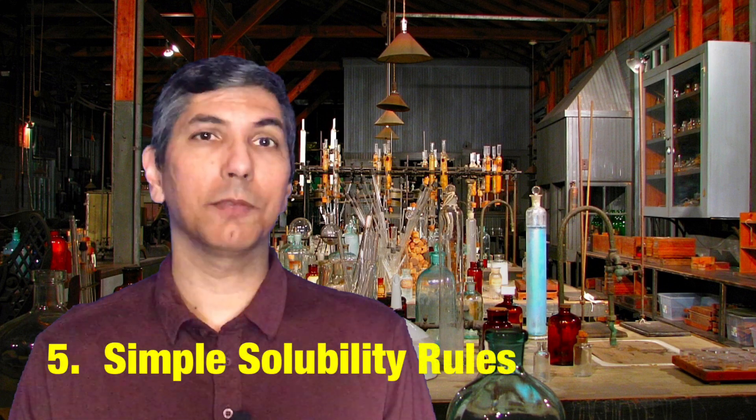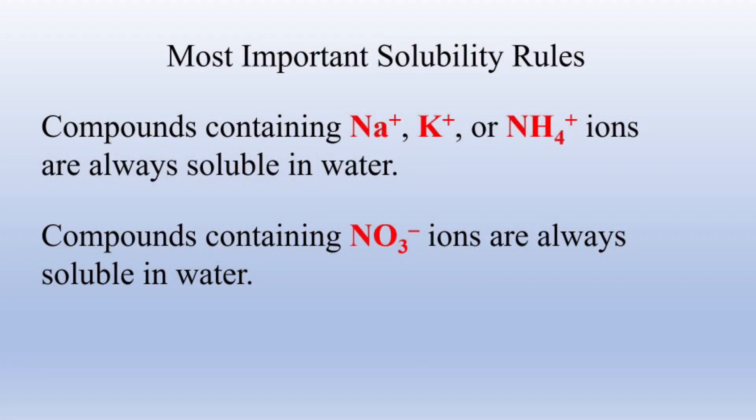Number five: simple solubility rules. When you add two solutions, you have to know that the ions that would form a soluble compound don't combine to produce a solid — instead, they remain in solution as spectator ions. It's the combination of ions that form the insoluble compound that make the precipitate. The College Board has written the AP exam so that you only need to know a small fraction of the solubility rules. Any ionic compound containing sodium ions, potassium ions, ammonium ions, or nitrate ions is soluble. On the AP exam, one of the solutions will have one of those ions, and it's the other combination that forms the precipitate. You have to know that those four ions are soluble.